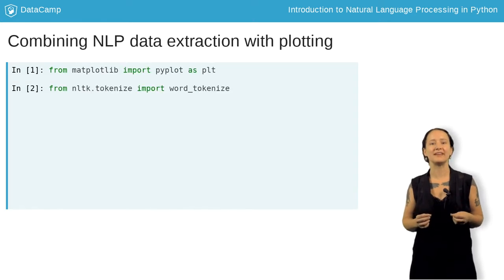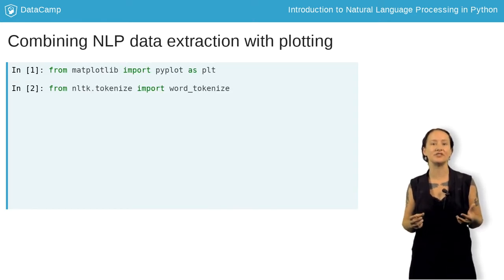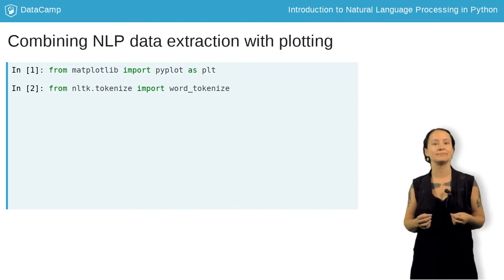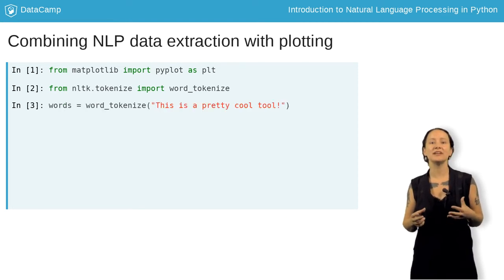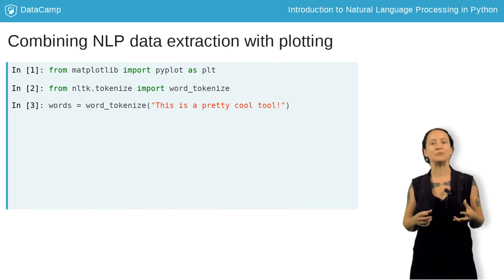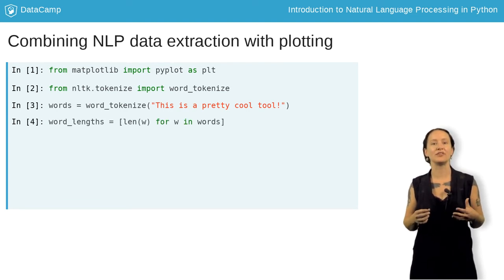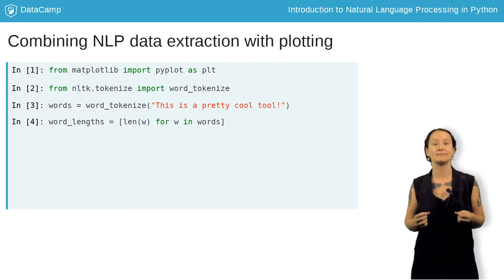First, we perform the necessary imports to use NLTK for word tokenization and Matplotlib charting. Then, we tokenize the words and punctuation in a short sentence. Finally, we can use Python list comprehension with our tokenized words array to transform it to a list of lengths.